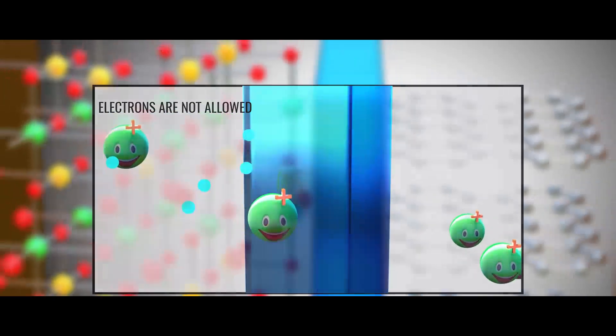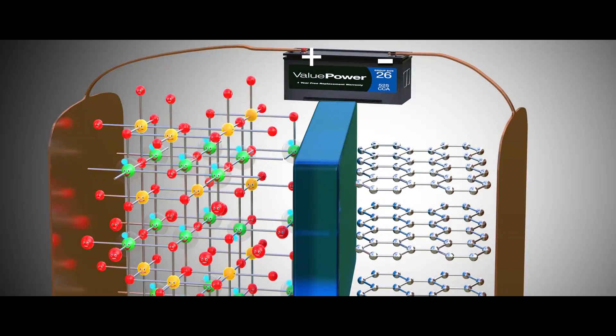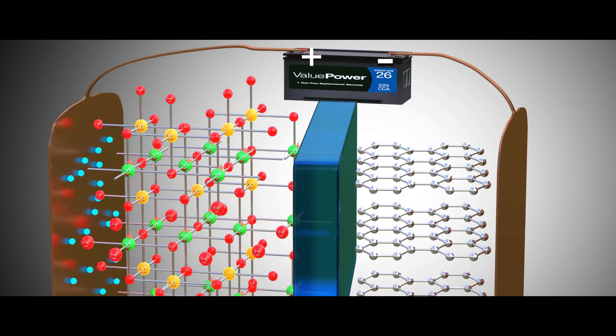Now, let's see what happens when you connect a power source across this arrangement. The positive side of the power source will obviously attract and remove electrons from the lithium atoms of the metal oxide. These electrons flow through the external circuit as they cannot flow through the electrolyte and reach the graphite layer.